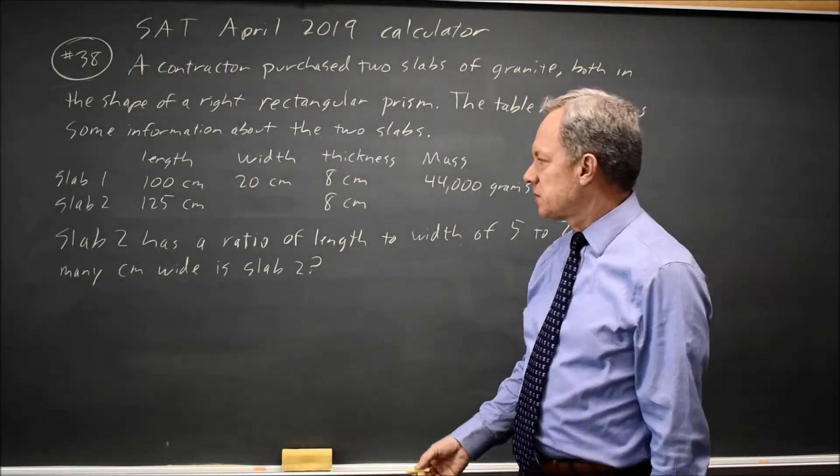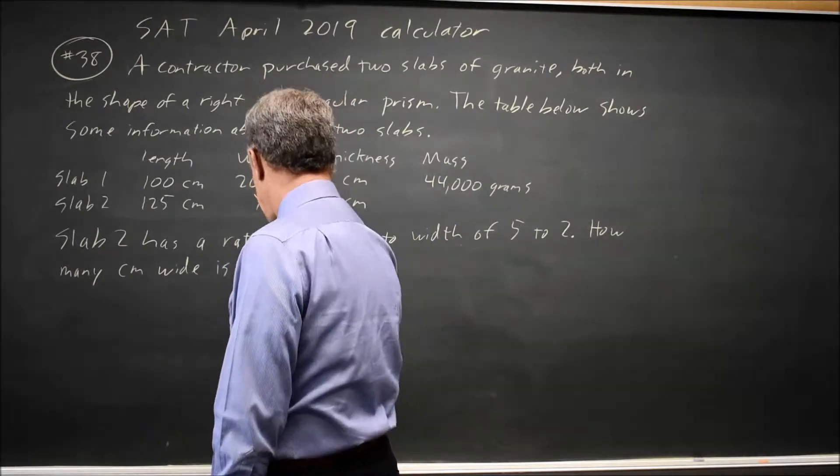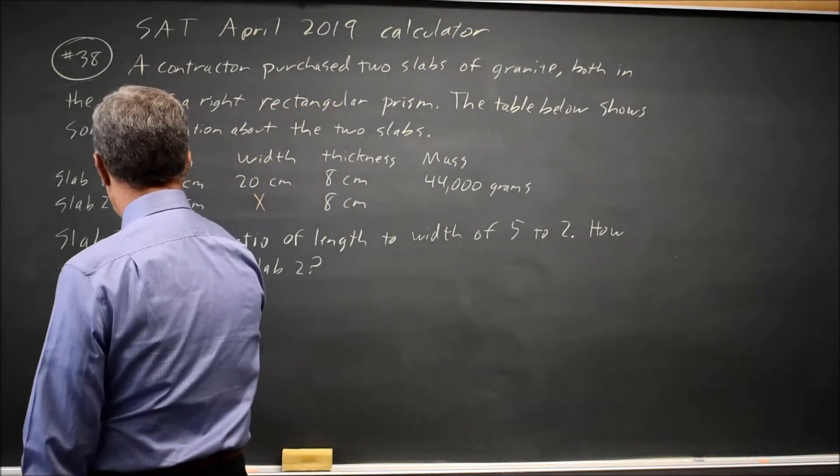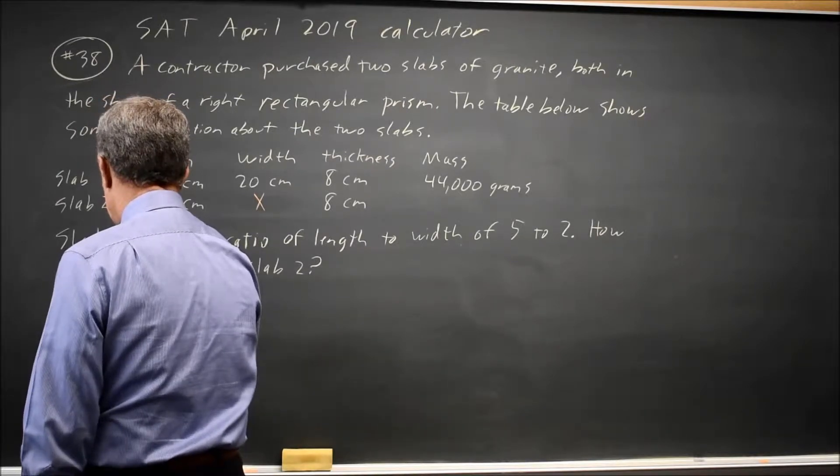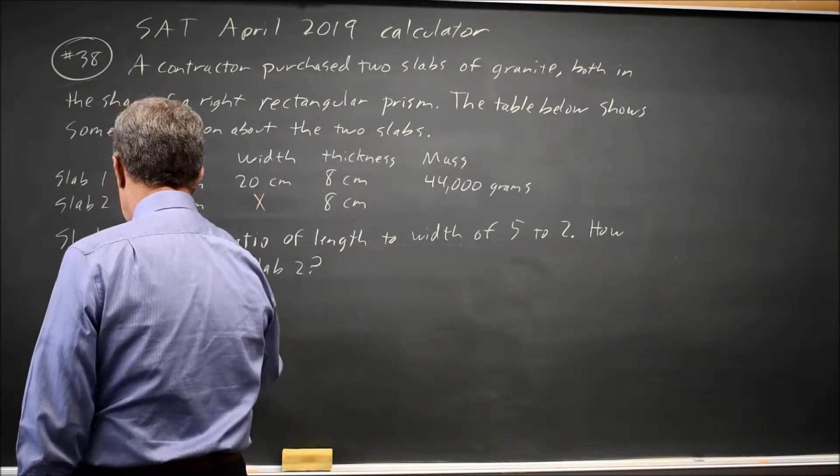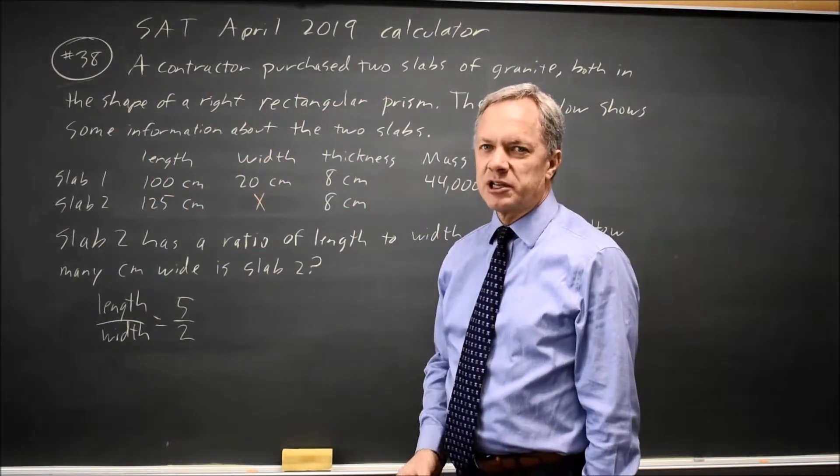They want you to find the width of slab 2 where they left that up in the table. So I'm going to call it x. And I have length over width equals 5 over 2. I like to be careful not to flip my ratios when I'm setting them up because that's one of the most common errors.